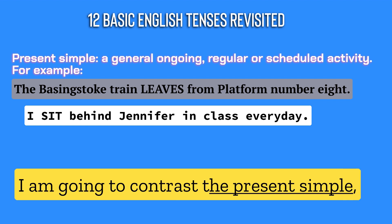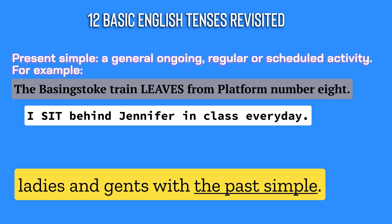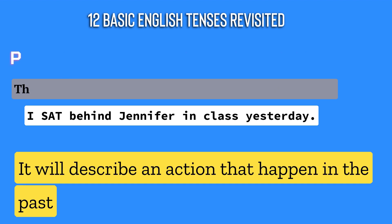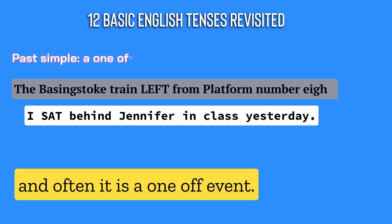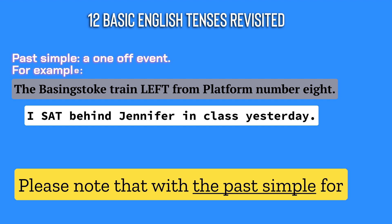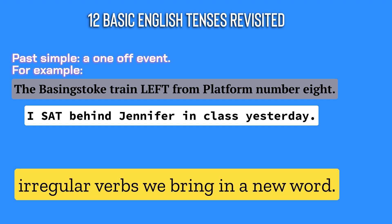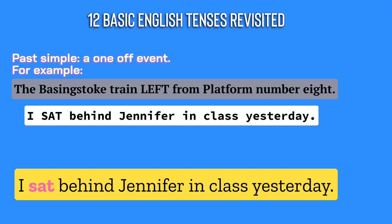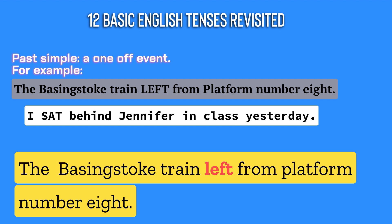I am going to contrast the present simple, ladies and gents, with the past simple. It will describe an action that happened in the past, and often it is a one-off event. Please note that with the past simple, for irregular verbs, it will bring in a new word. 'I sat behind Jennifer in class yesterday.' 'The business truck train left from platform number 8.'